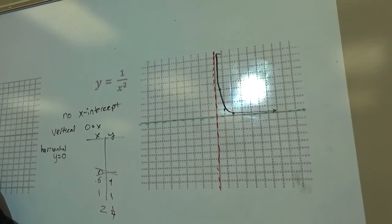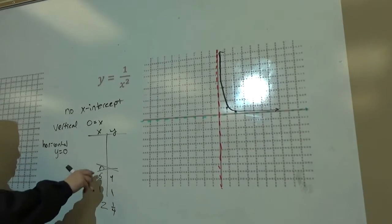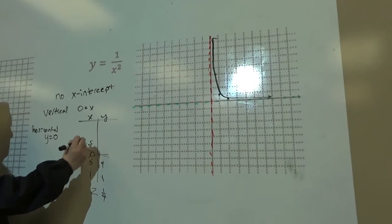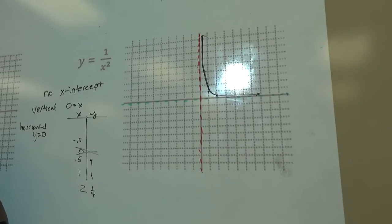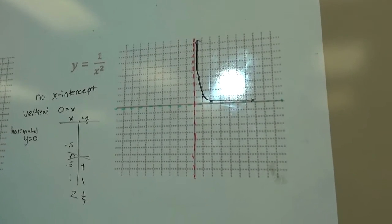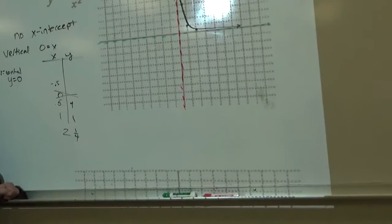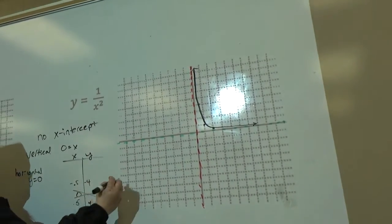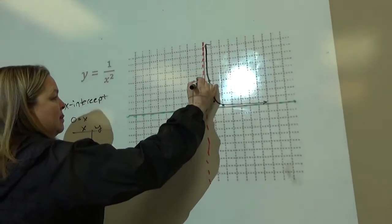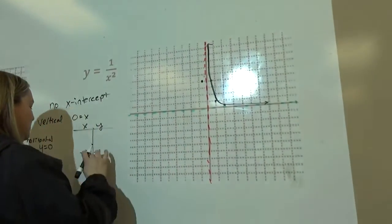Okay, on the left side of zero, I'm going to try a number like negative point five. What do you get at negative point five? Negative four. Positive four. You're right.